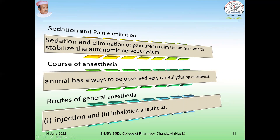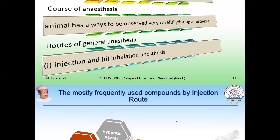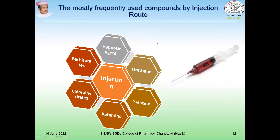Animals must always be observed carefully during anesthesia. General anesthesia is administered by two major routes: the injection route and the inhalation route. Drugs widely used as injectable general anesthetics include barbiturates, chloral hydrate, ketamine, xylazine, urethane, and hypnotic agents.